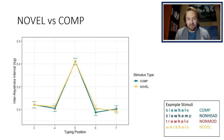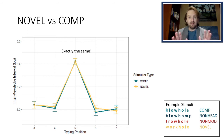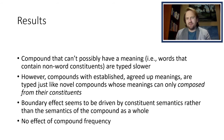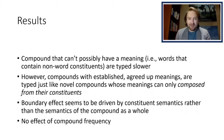The last analysis, and possibly the most surprising, was a comparison between the novel and compound stimuli. Here we see that they are exactly the same — there were no significant differences across any of the five typing positions. These results suggest that compounds that can't possibly have a meaning — where one of the constituents is a non-word — are typed slower. However, novel compounds are also non-words in a way. Compounds have an established, agreed-upon meaning, whereas novel compounds only have a meaning that can be composed from their constituents. If both are produced in exactly the same way, we can conclude that boundary effects seem to be driven by constituent semantics rather than the semantics of the compound as a whole.